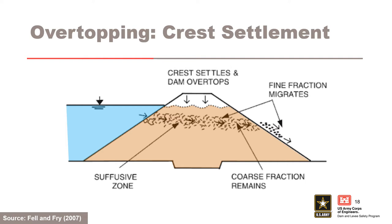Overlying fines are removed from a zone of internally unstable material in the embankment by suffusion, and the overlying fines move into the remnant openwork zone by internal migration, leading to crest settlement large enough to result in overtopping. Alternatively, suffusion can occur in a zone of internally unstable material in the embankment, resulting in settlement that also leads to overtopping. As previously mentioned, most breach mechanisms will eventually lead to overtopping.